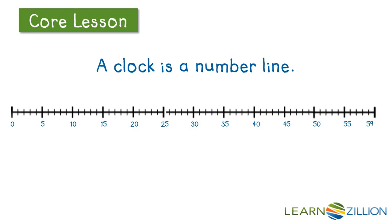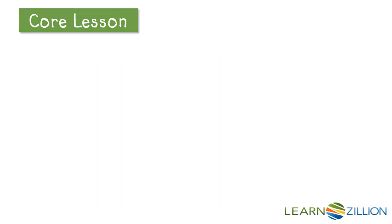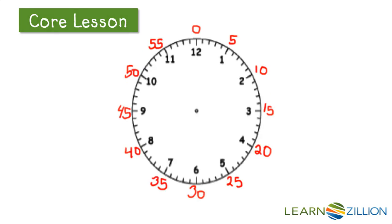Usually when you look at a number line, not all the hashes have a number label because there's not enough space, and clocks are exactly the same. So instead of numbering each hash, which would be pretty hard to read, they only number every five hashes.